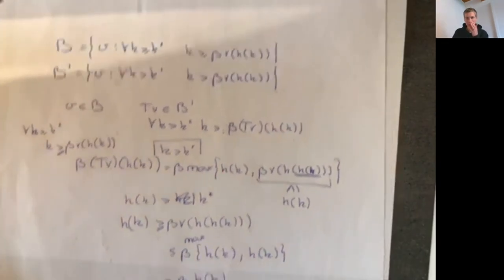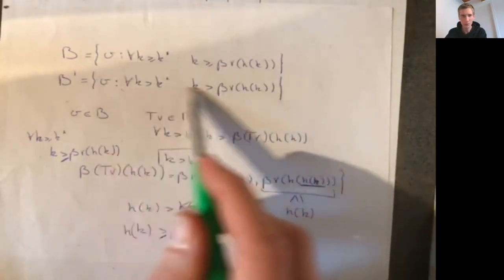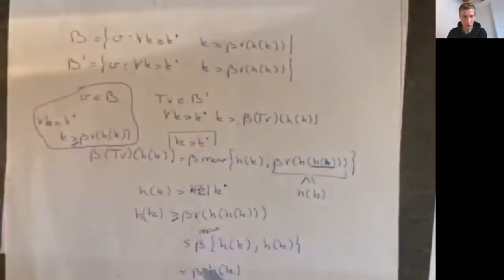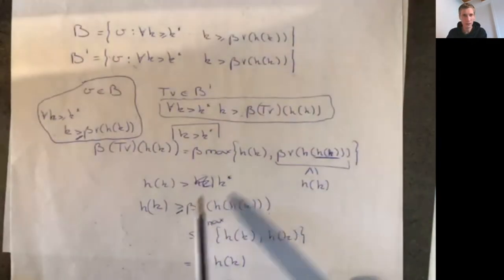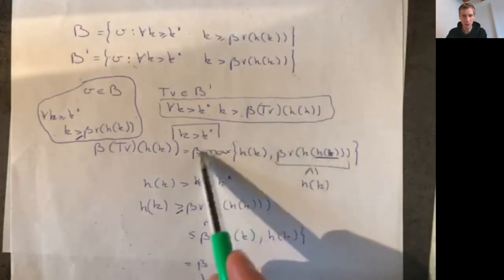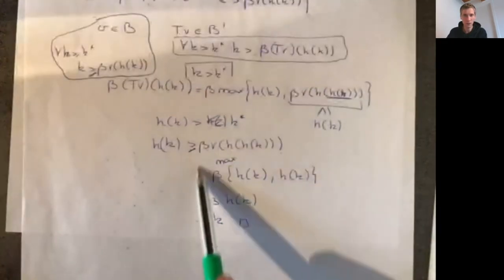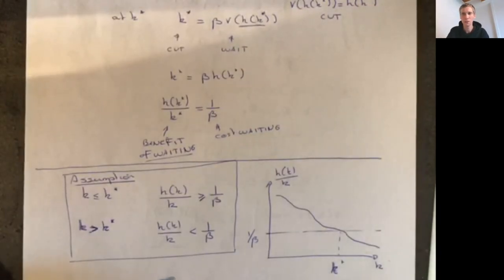So I have shown that β·T(v)(h(k)) is strictly smaller than k. The second proof was a bit more complicated: we started with v in the closed set, used its property to show β·v(h(h(k))) ≤ h(k), and then used the assumption on h to conclude. So indeed it will be optimal to cut the tree if it's big enough, but not if it's smaller than k*. Thanks for watching.